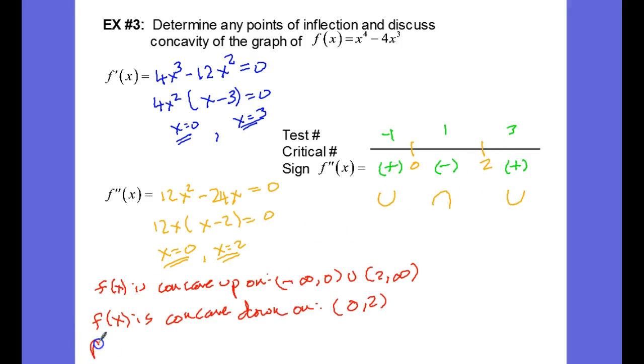So we have points of inflection at x equals 0, x equals 2. Thank you.